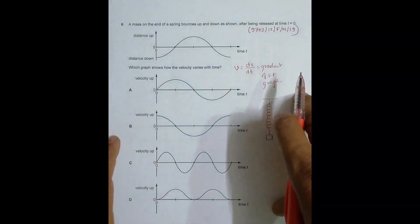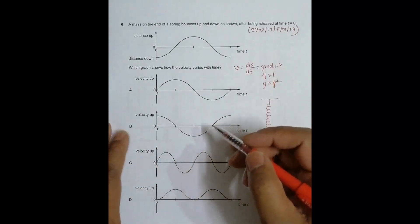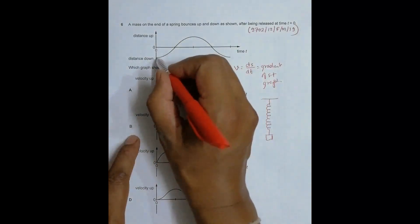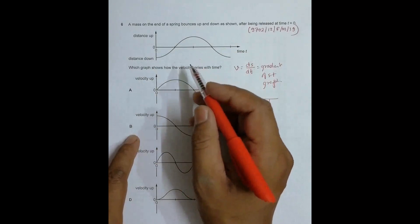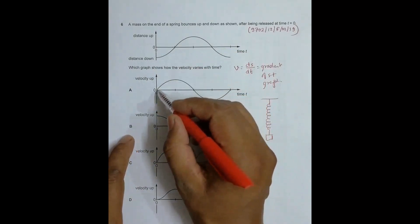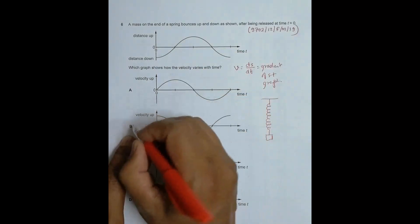Initially here at this position, the slope is zero. Slope zero means that the value of velocity there should be zero. So this qualifies, this does not qualify.